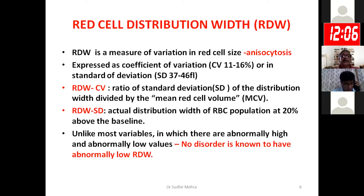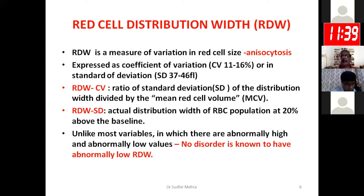RDW-CV is the ratio of the standard deviation of the distribution width divided by the mean red cell volume, and this parameter is very sensitive to the appearance of microcytes. RDW-SD, on the other hand, is the actual distribution width of the RBC population at 20 percent above the x-axis on the RBC histogram, and it is sensitive to the appearance of macrocytes. Usually in medical literature, values are either normal or increased; there is practically no disorder which has an abnormally low RDW value.